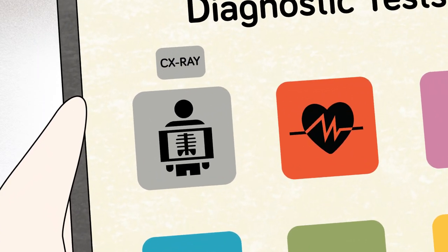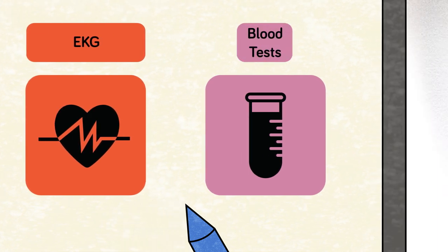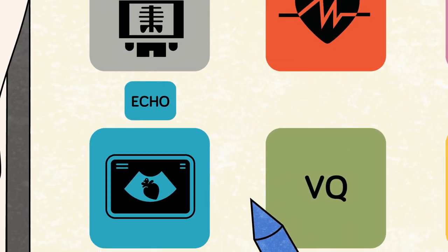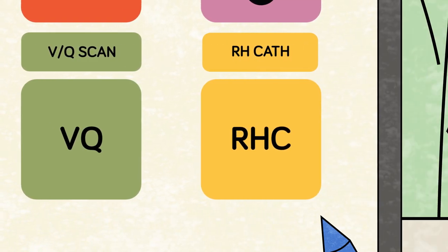Diagnostic tests include a chest x-ray, electrocardiography, blood tests, an echocardiogram, a ventilation perfusion scan, and a right heart catheterization.